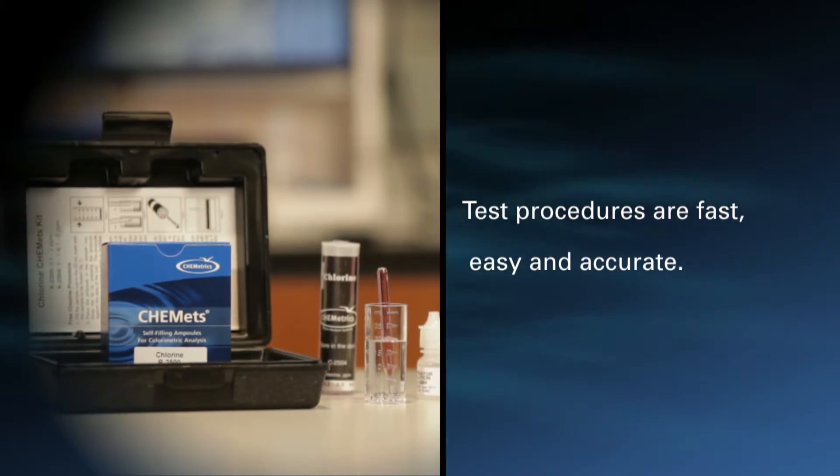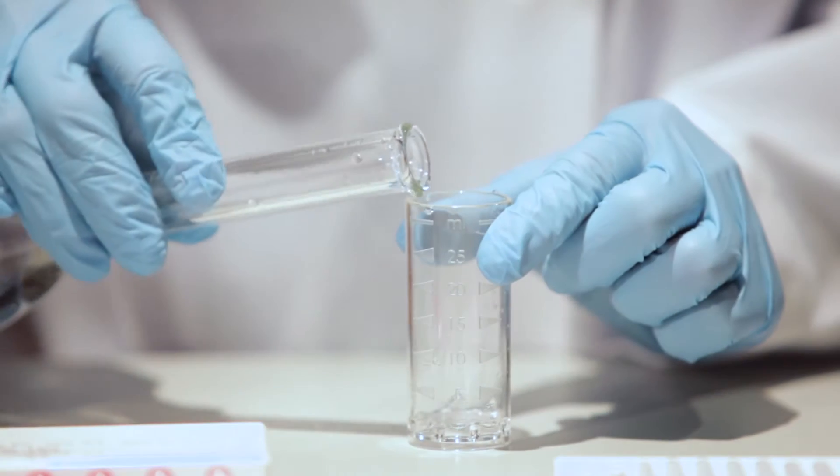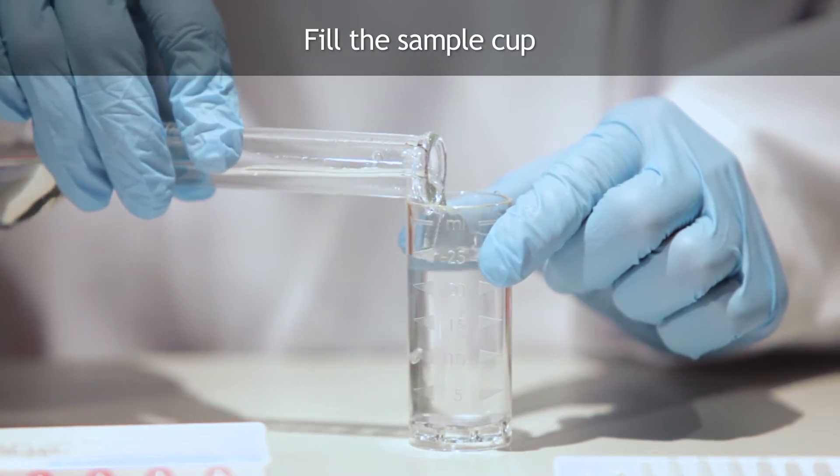Test procedures are fast, easy and accurate. To perform a test using the CHEMets test procedure, fill the sample cup to the 25 milliliter mark with the sample to be tested.